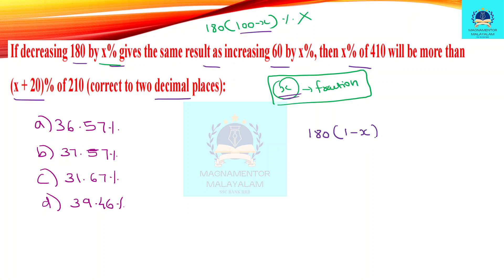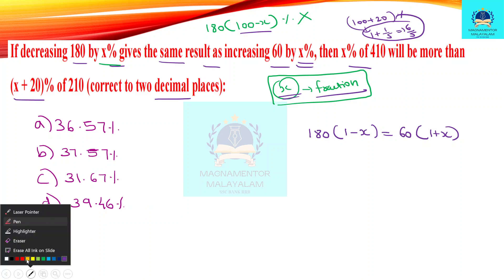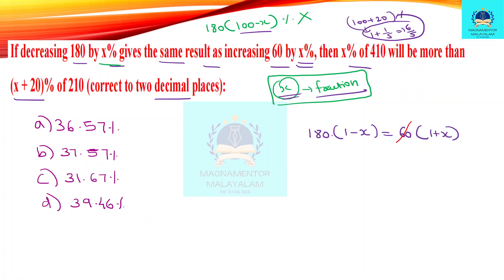This gives the same result as increasing 60 by x percentage — that is equal to 60 multiplied by (1 plus x). Setting these equal: 1 plus x by 1 minus x. We also get the ratio 1 by 5 on one side, giving 6 by 5 on the other. So (1 plus x) divided by (1 minus x) equals a ratio.